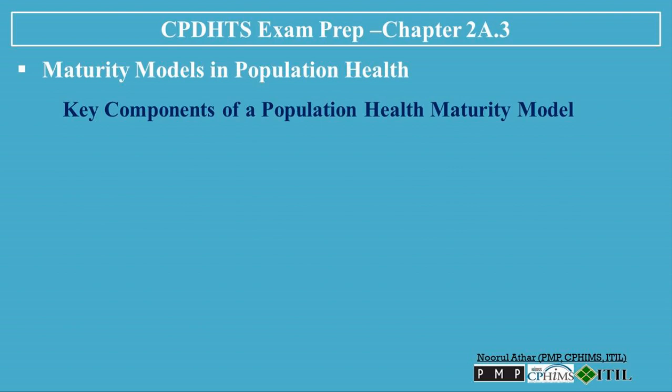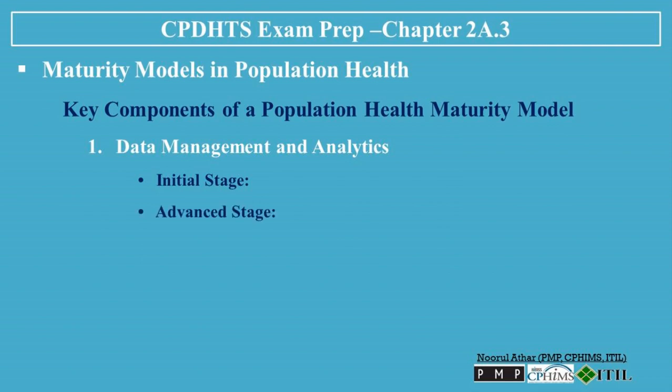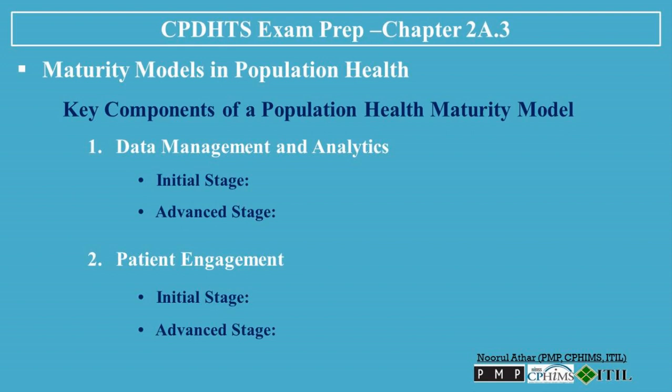Key Components of a Population Health Maturity Model. 1. Data Management and Analytics: Initial stage — data collection is sporadic and analytics capabilities are limited. Advanced stage — comprehensive data integration from multiple sources with advanced analytics capabilities to inform proactive health interventions. 2. Patient Engagement: Initial stage — patient engagement is minimal or reactive, based largely on individual encounters. Advanced stage — robust engagement strategies using personalized communication and digital tools that encourage active participation in preventive health and chronic disease management.